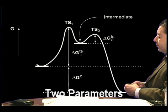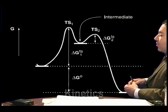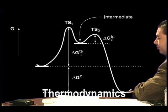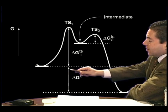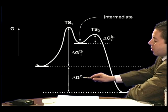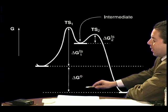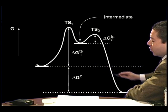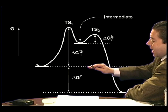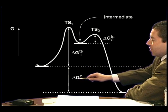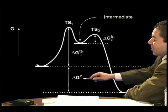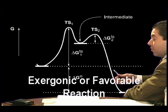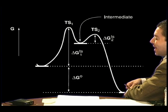There are two parameters: the kinetics and the thermodynamics. The thermodynamics is the difference of energy between the product and the reactant, and that is the delta G naught. If you have a reaction energy profile in which the product is at lower free energy than the reactants, namely a negative delta G naught, that is an exergonic or favorable, spontaneous thermodynamic reaction.